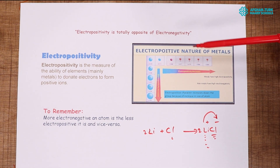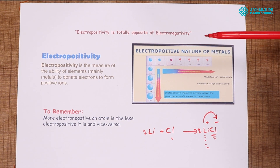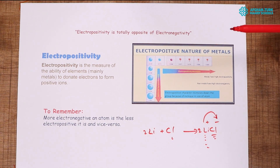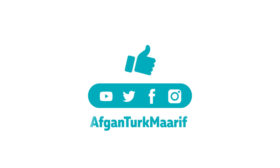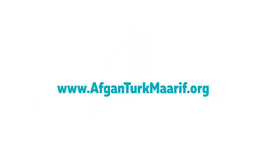The most electropositive elements are francium and cesium, and the most electronegative elements are fluorine, oxygen, nitrogen, chlorine, and bromine. Thanks for watching today's lesson — hope you learned something new. If you have any questions or suggestions, write in the comment section below, and don't forget to subscribe and give a thumbs up.